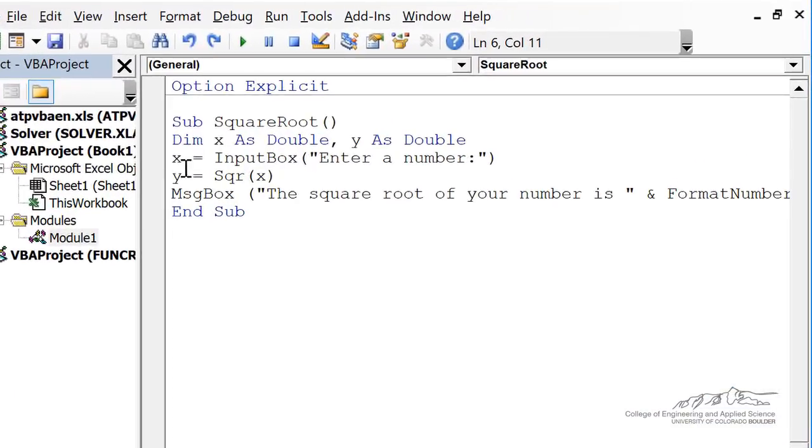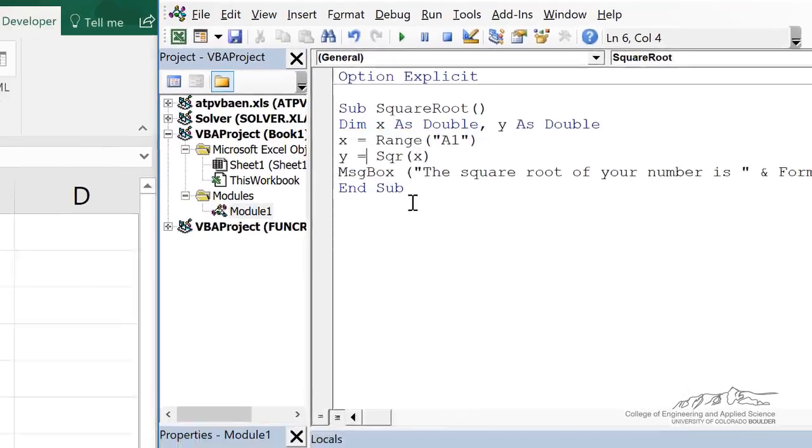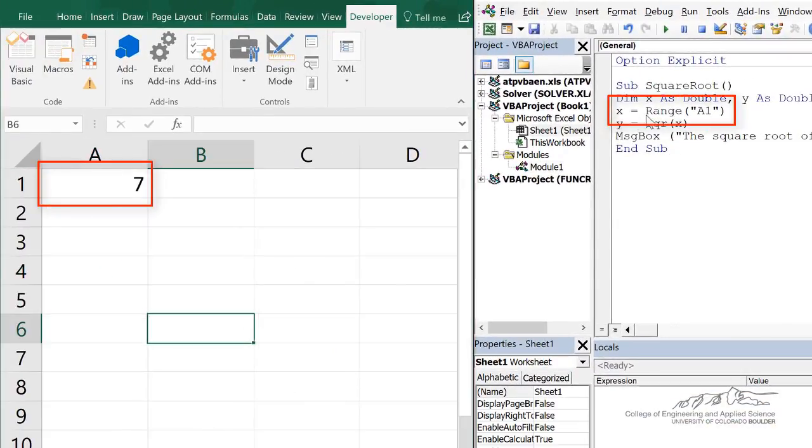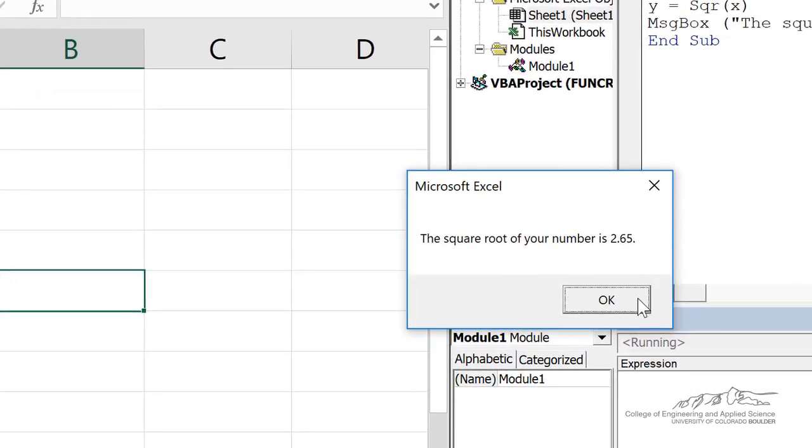So instead of X being acquired in an input box, it's just going to be equal to range A1. So now when I run this, it's going to take 7, regardless of where my active cell is. It's going to always take range A1. So I run this, and it outputs it in a message box.